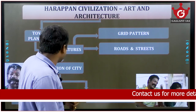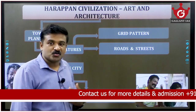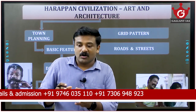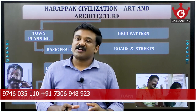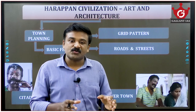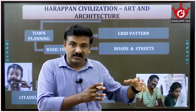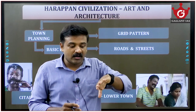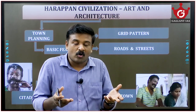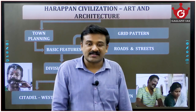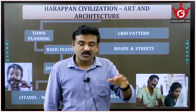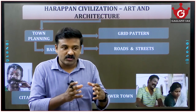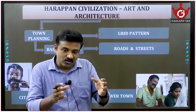The Indus city is divided into two parts: the Citadel towards the western side and the Lower Town towards the eastern side. The Citadel has huge dimensional buildings located on an upraised mud platform, built this way to protect from flooding and natural calamities. The Citadel housed the ruling and administrative classes, along with major structures.